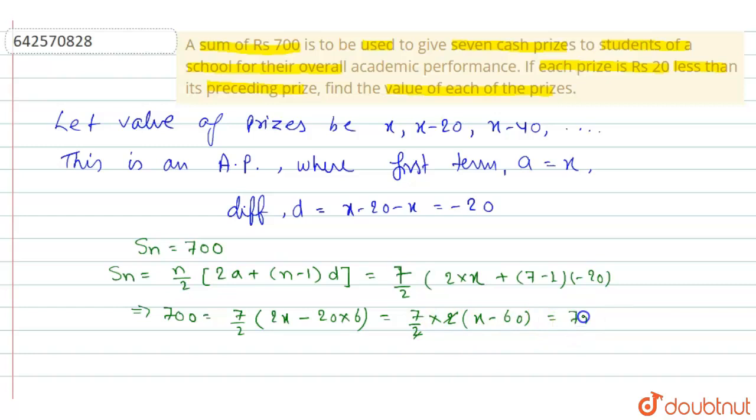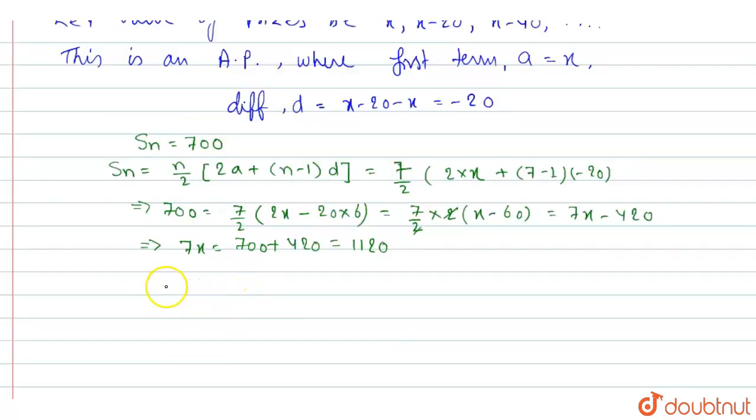Now we are left with 7x minus 420. So from here we get 7x is equal to 700 plus 420 which is equal to 1120 and x will be equal to 1120 by 7 which is 160.